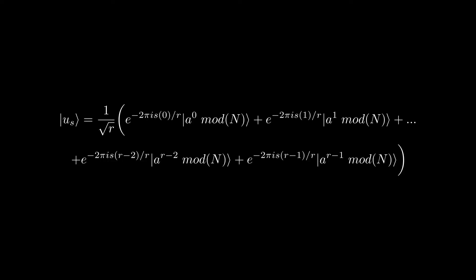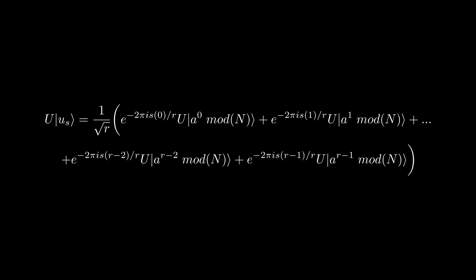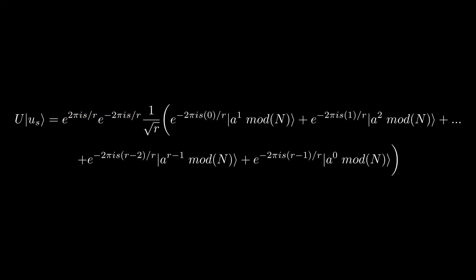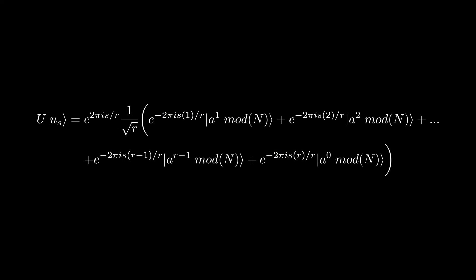Let's consider this state us. If we apply a U gate to the state, it gives us this state. Looking at the a to the r mod n, we can change this to a to the 0 mod n, since they are both 1. If we multiply the right hand side by 1 or e to the 2 pi is over r times e to the negative 2 pi is r over r, we get this state. We can change the e to the negative 2 pi is r over r to e to the negative 2 pi i 0 over r, since they are both equal to 1.